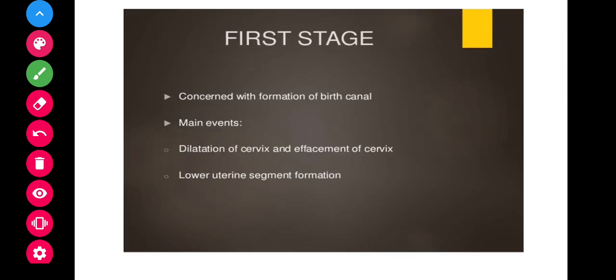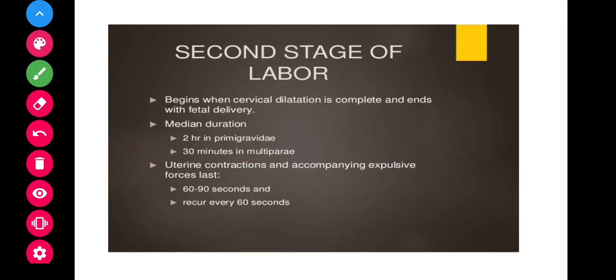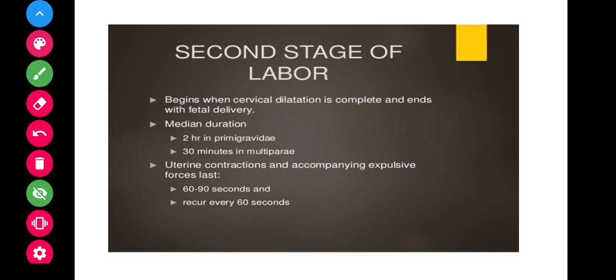The first stage lasts approximately 12 hours in primigravida and 6 hours in multigravida. The second stage begins with full cervical dilatation and ends with delivery of the fetus. It takes approximately two hours in primigravida and 30 minutes in multigravida. Uterine contractions and accompanying expulsive forces last 16 to 90 seconds.